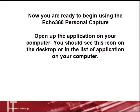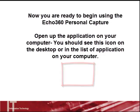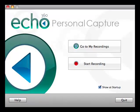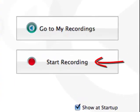Open up the application on your computer. You should see this icon on the desktop or in the list of applications on your computer. From the Echo 360 Personal Capture launch screen, select Start Recording to make a new recording.